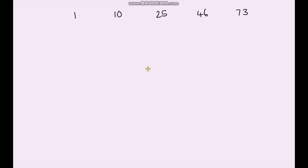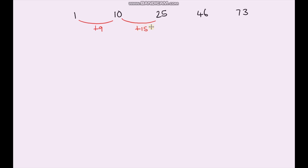Let's do another example. Find the nth term of this sequence — have a go yourself before continuing. First, work out the difference between each term: between 1 and 10 we're adding 9; between 10 and 25 that's +15; here it's +21; and from 46 to 73 we're adding 27. The first difference is different each time, so it's not an arithmetic sequence.